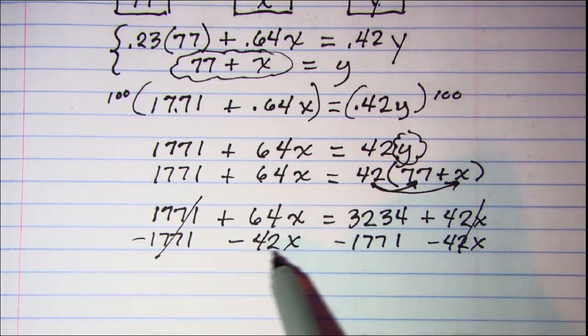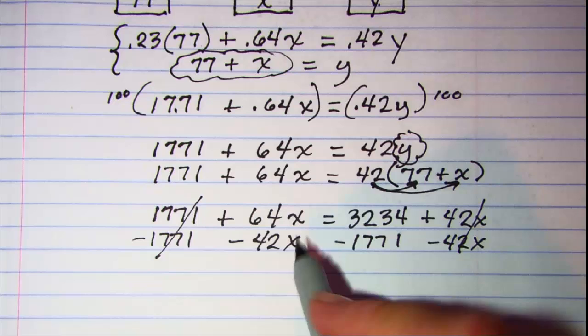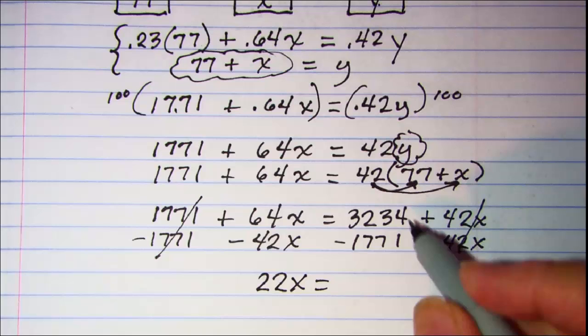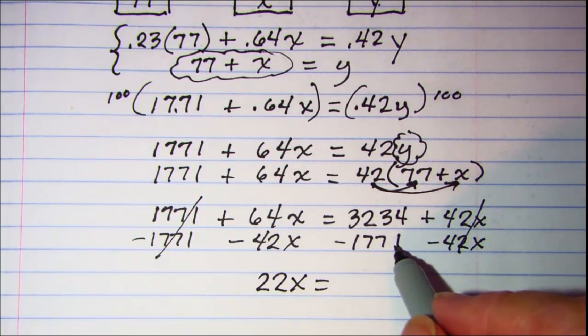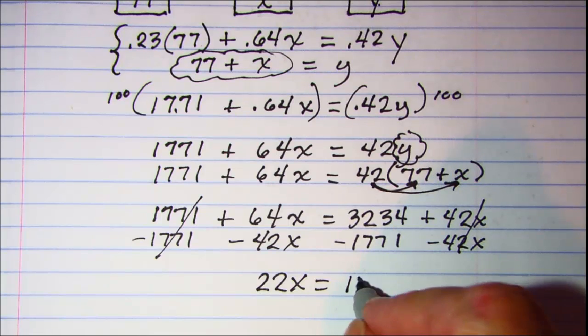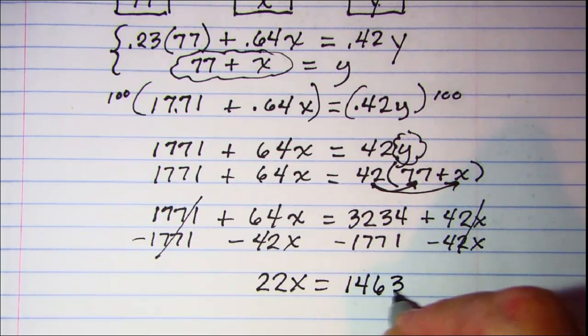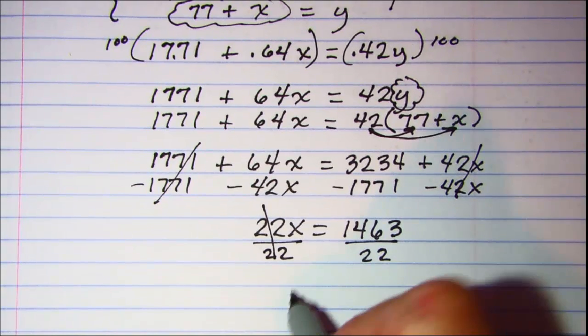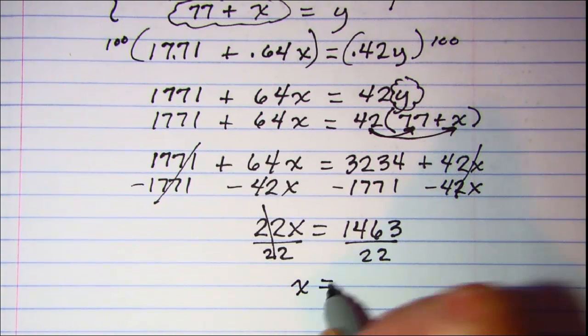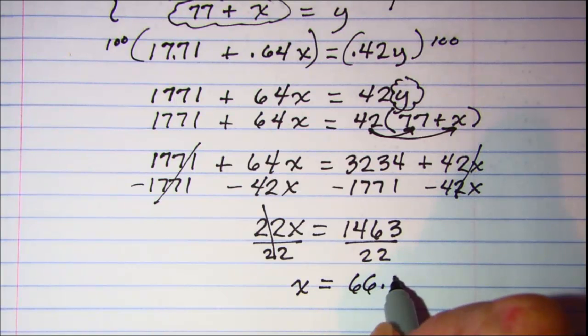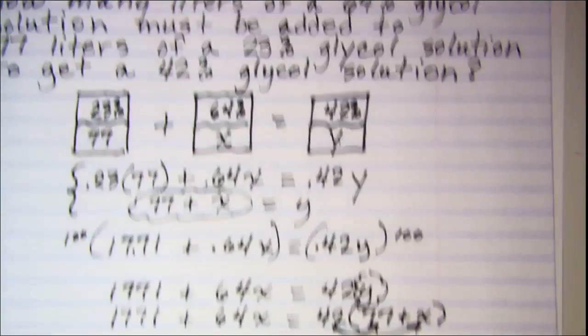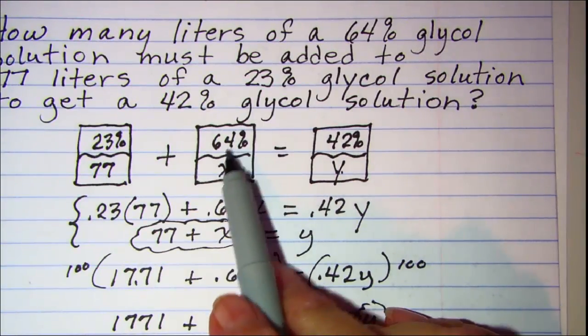Now 64x subtract 42x is 22x, 3234 subtract 1771 is 1463. Divide both sides by 22. This will cancel and x is equal to 66.5 liters and that's my 64% glycol.